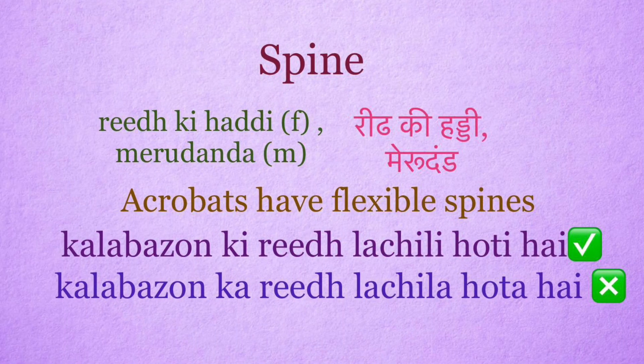Spine: reed ki haddi (feminine), meru danda (masculine). Acrobats have flexible spines. Right use: Kalabazoon ki reed lacheli hoti hai. Wrong use: Kalabazoon ka reed lachila hota hai.